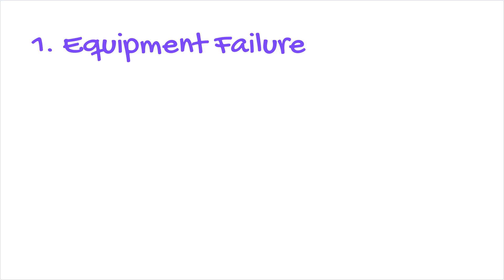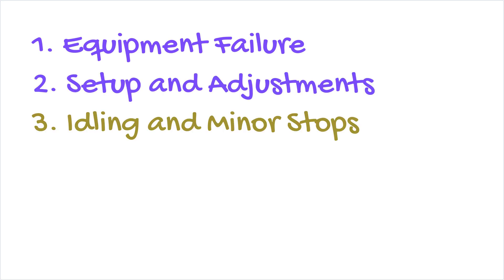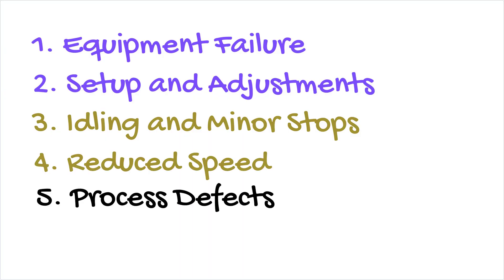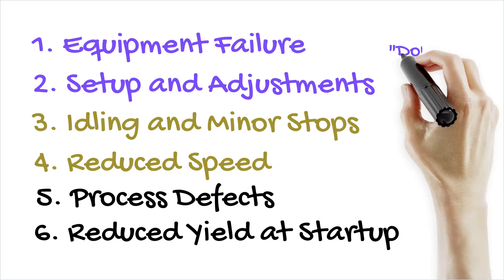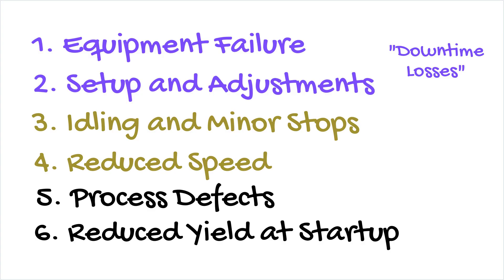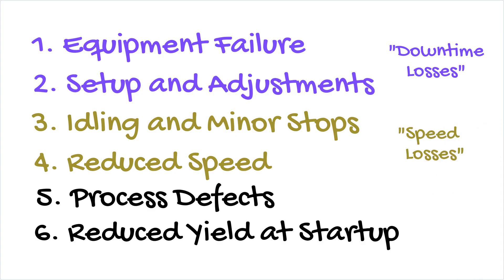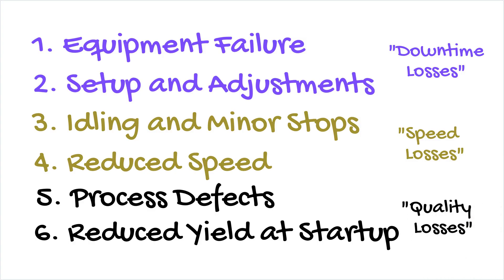Let's review the list again: equipment failures, setup and adjustments, idling and minor stops, reduced speed, process defects, and reduced yield at startup. A quick way to remember them — two downtime losses: equipment failures and setup adjustments; two speed losses: idling minor stops and reduced speed; two quality losses: process defects and reduced yield.